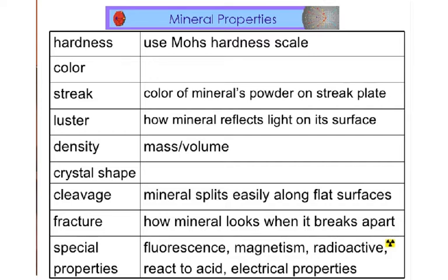For hardness, we're going to look at a scale called Mohs hardness scale - basically it's a mineral's resistance to being scratched. The color is not always going to be the best way to identify a mineral, because some minerals, depending on what other impurities they have, can change colors. For example, quartz comes in many different colors: pink, white or clear, smoky or gray. But there are a few minerals, like sulfur, which has a bright yellow color.